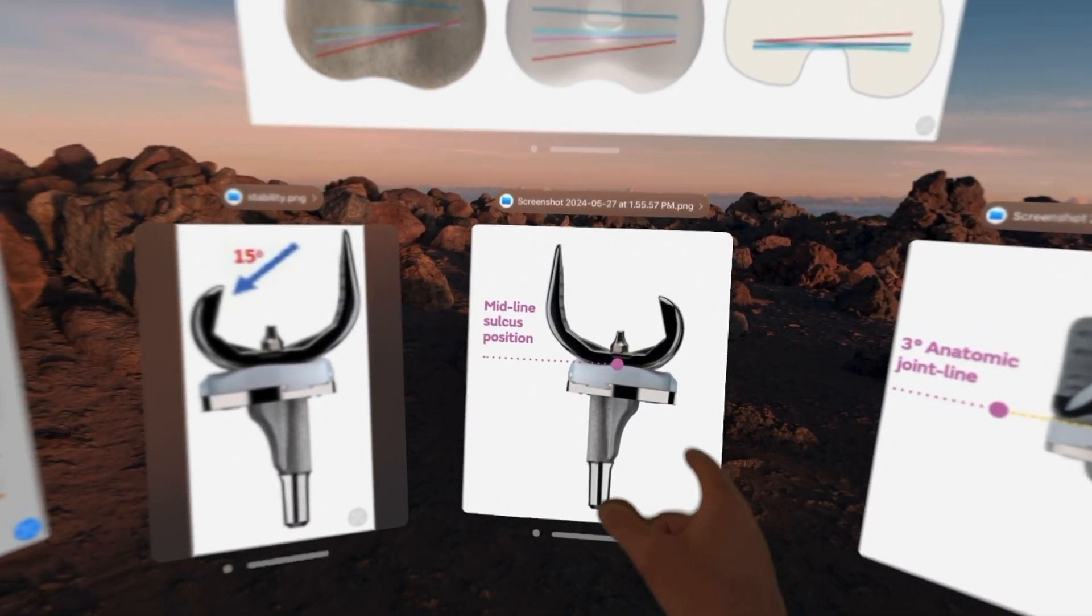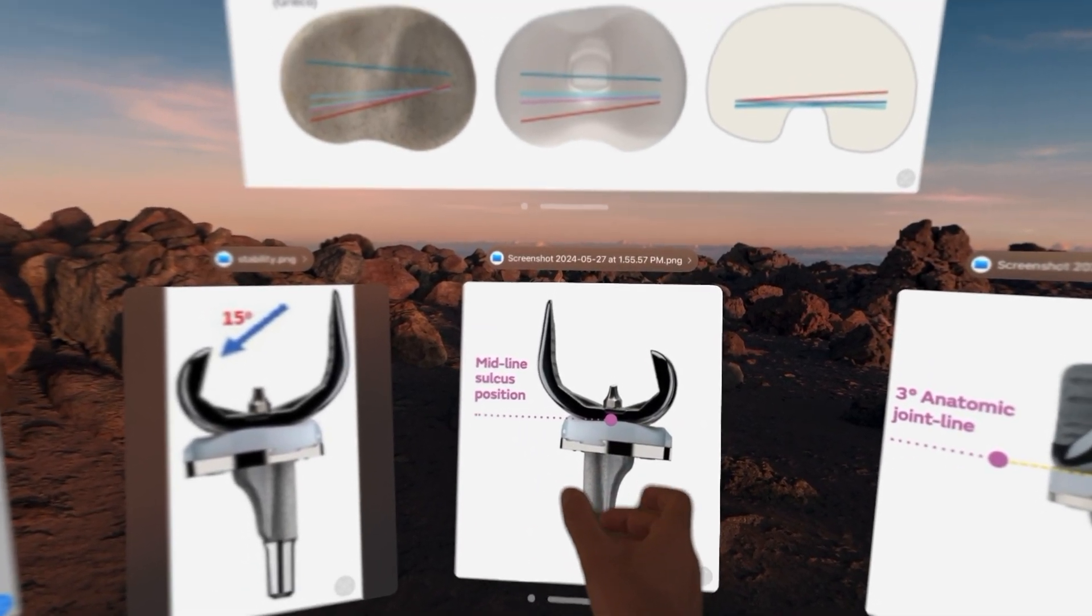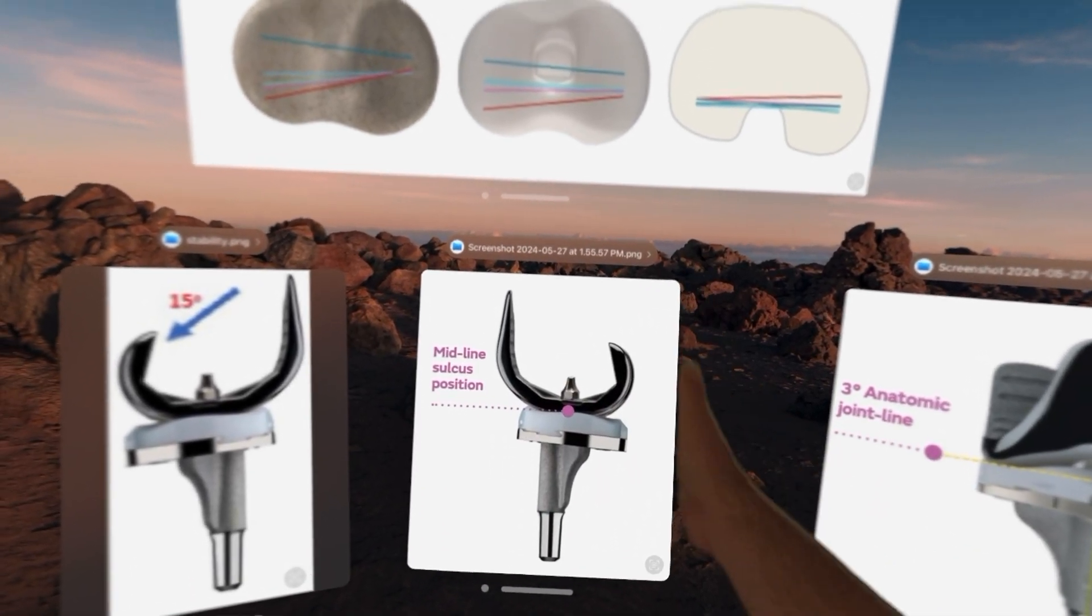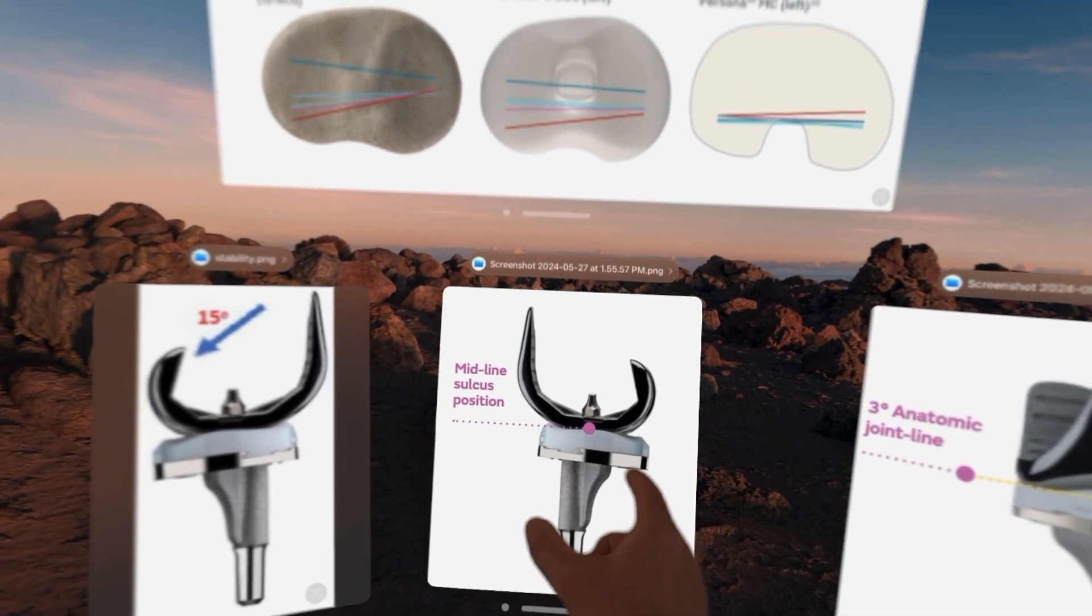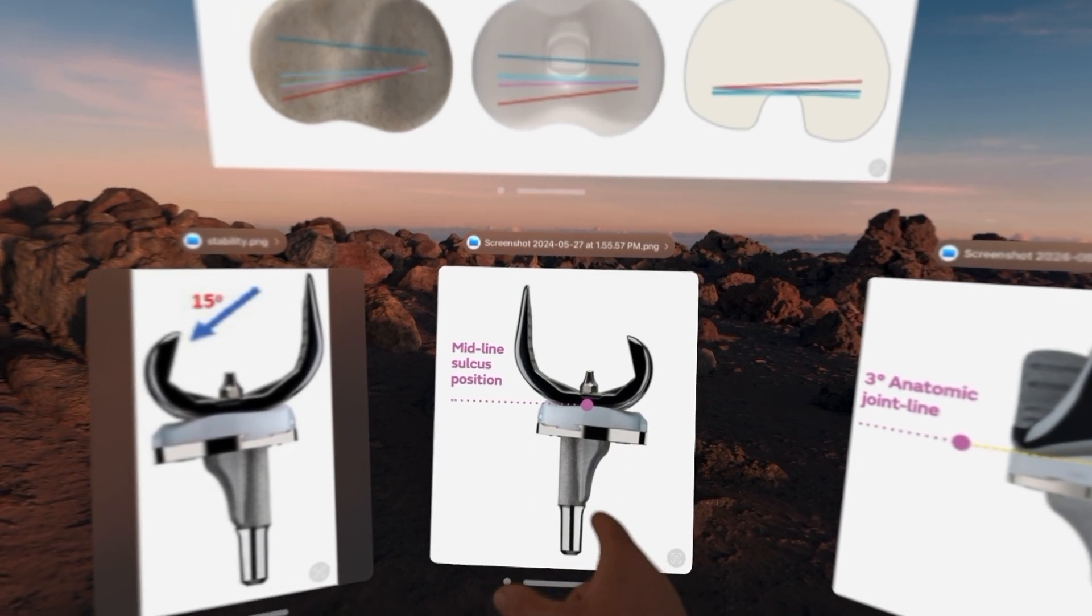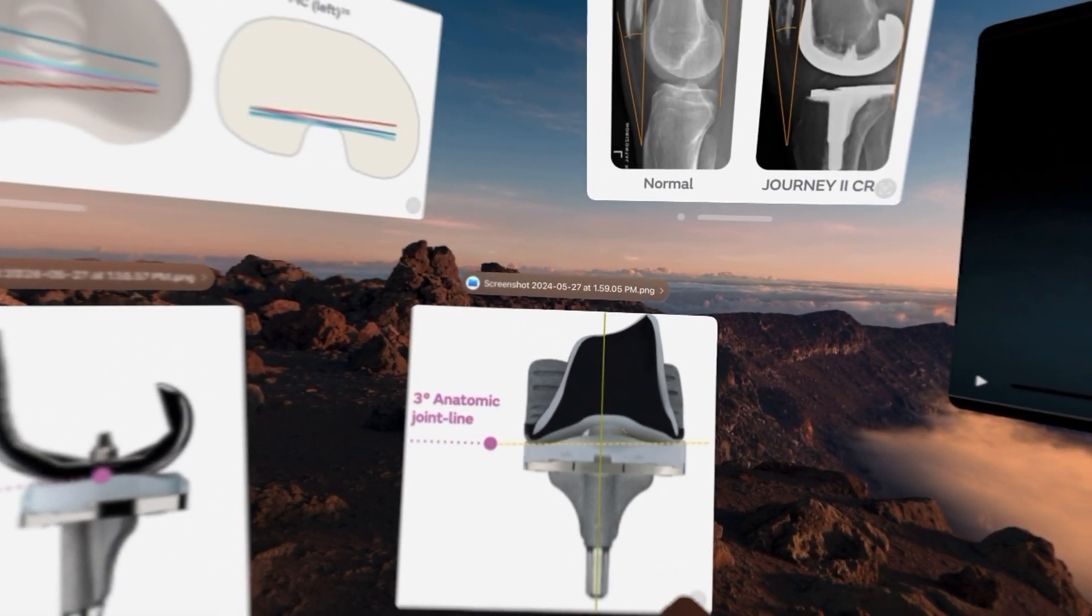It's also designed where the femur sits more anterior relative to the tibia. So we saw before on knee replacements where the femur was hanging off the back of the tibia. This knee is designed different. It's designed to give you a more natural orientation of the femur relative to the tibia. And it also recreates the three-degree joint line as we saw.